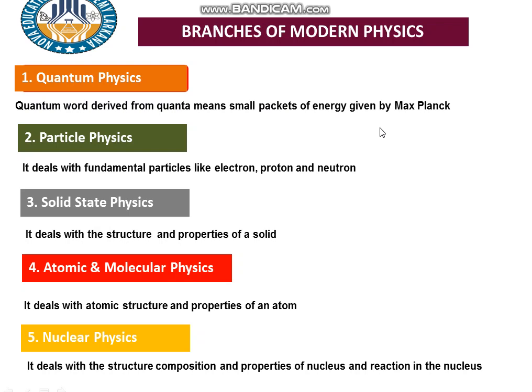Max Planck introduced modern physics, so this branch is also called quantum physics. The next branch is particle physics. It deals with the fundamental particles like electrons, protons, and neutrons. The study of these fundamental particles — electron, proton, and neutron — is called particle physics.